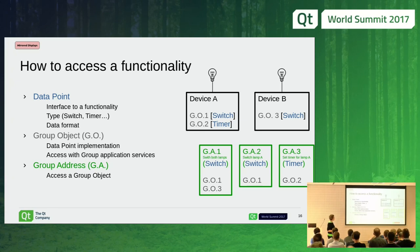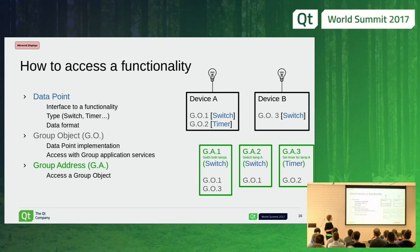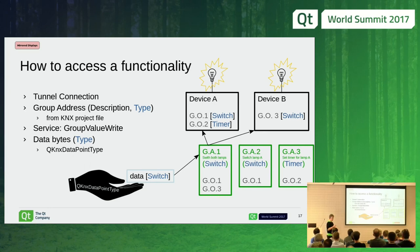This is supposed to summarize that idea. Let's say we have three group addresses. A group object and a group address are both linked to a certain type, because if you send a message to a given group address, that address needs to be of a given type since it may target multiple objects that need to receive this kind of message. For example, group address number one has the description 'switch both lamps'. This group address is associated to two group objects — group object one and group object three — and they are both switches. If you send a switch-on frame to this group address, you will turn on both lamps.